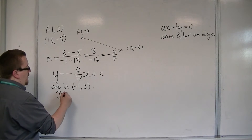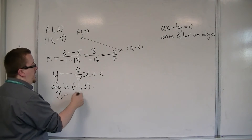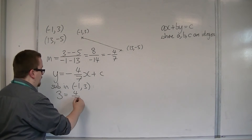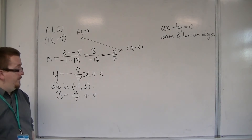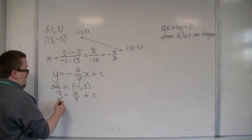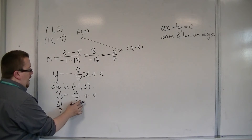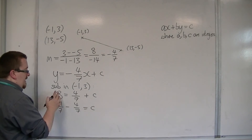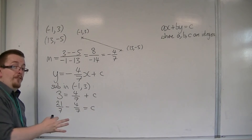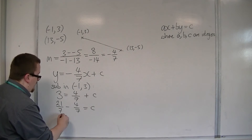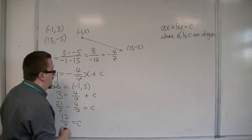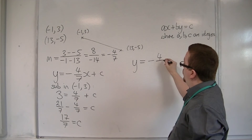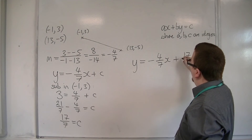The y gets replaced with 3. The x gets replaced with minus 1. So minus 4 sevenths times minus 1 is just 4 sevenths, and the c remains as it is. Now the 3 can be written as 21 over 7. I'm going to take 4 sevenths from both sides. So c is 21 sevenths take away 4 sevenths, which makes 17 sevenths. Now I can say that the equation of the line is y is equal to minus 4 sevenths x plus 17 sevenths.